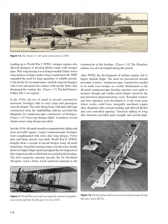Leading up to World War I, stronger engines also allowed designers to develop thicker wings with stronger spars. Wire wing bracing was no longer needed. Flatter, lower wing surfaces on high-camber wings created more lift. World War I expanded the need for large quantities of reliable aircraft. Used mostly for reconnaissance, stacked-wing tail-draggers with wood and metal truss frames with mostly fabric skin dominated the wartime sky. The Red Baron's Fokker Dr.I was typical.